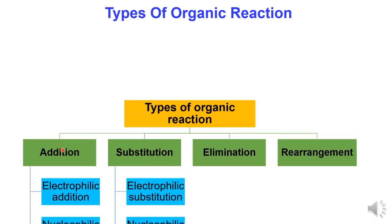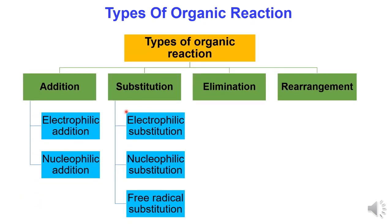Types of organic reaction: There are 4 types. Number 1: Addition reaction — electrophilic addition and nucleophilic addition. Number 2: Substitution — electrophilic substitution, nucleophilic substitution, and free radical substitution. Number 3: Elimination. Number 4: Rearrangement.